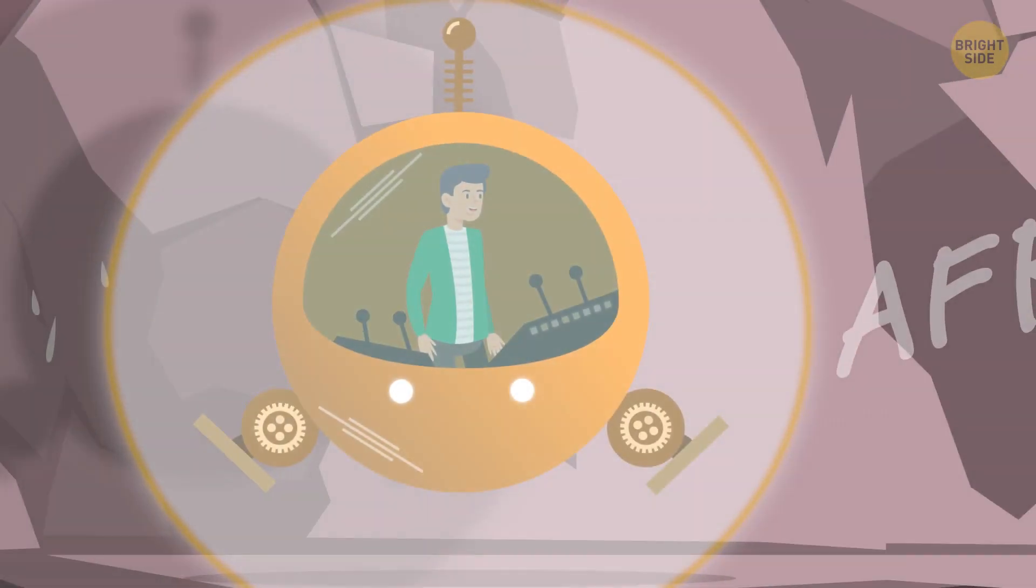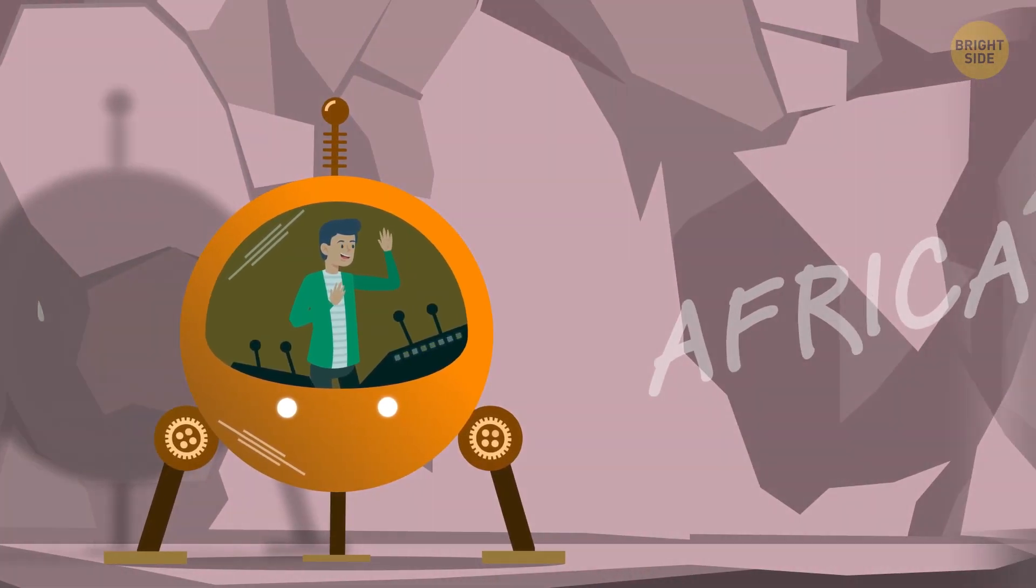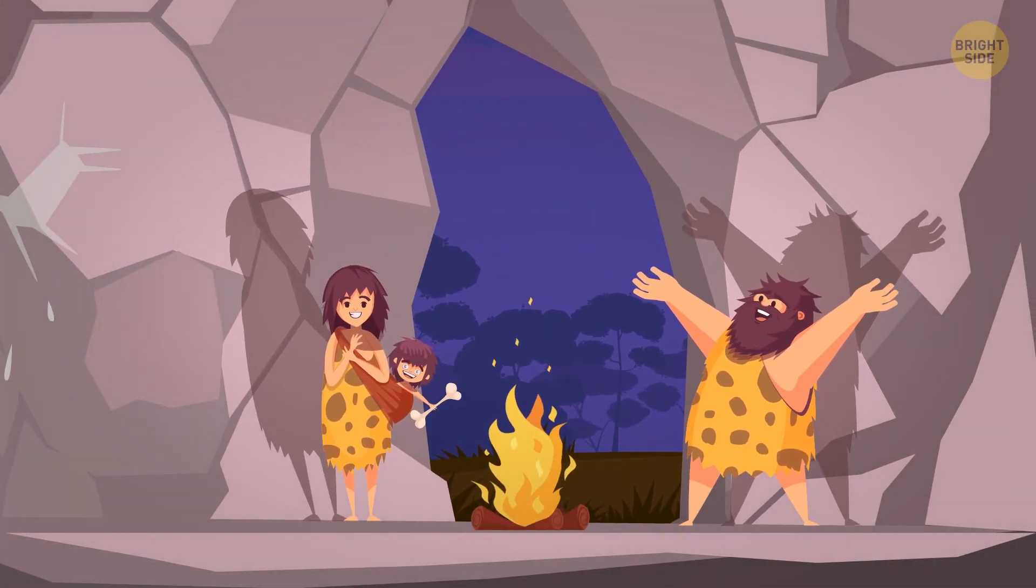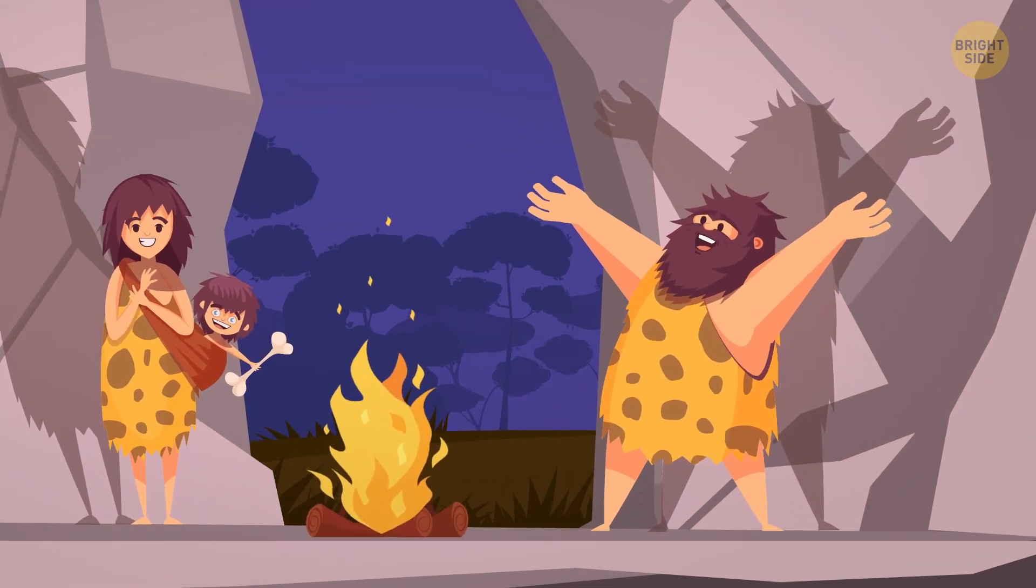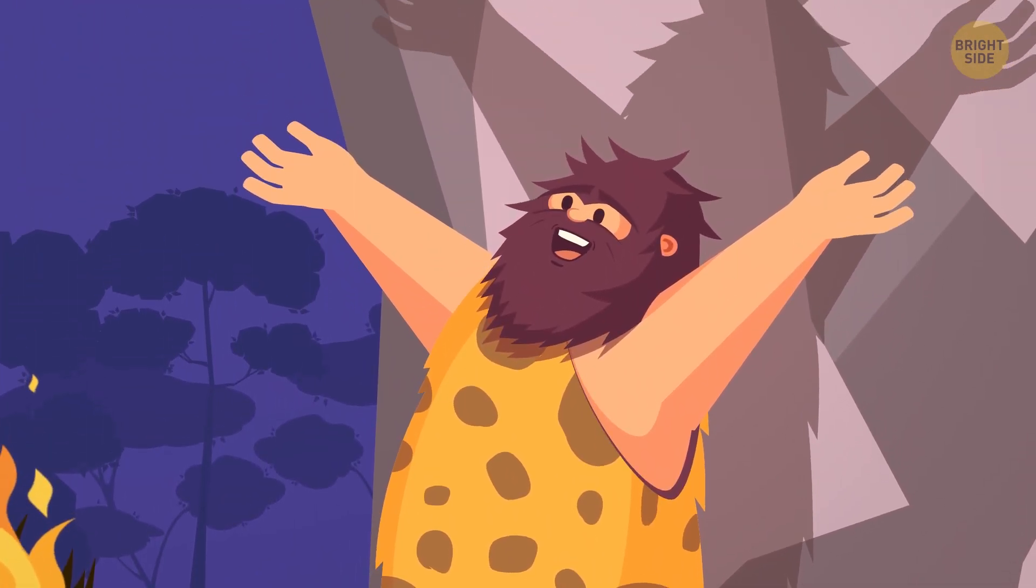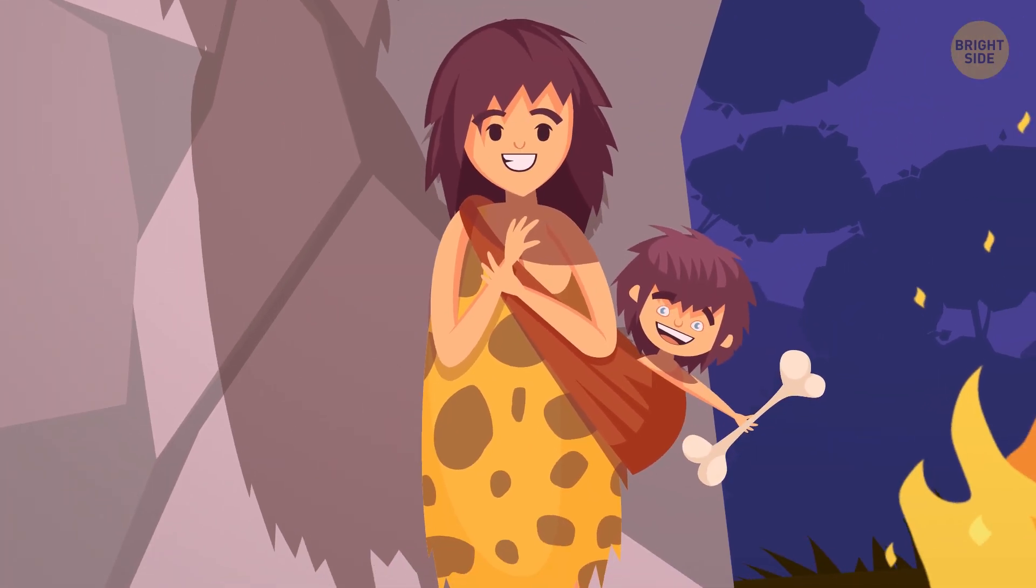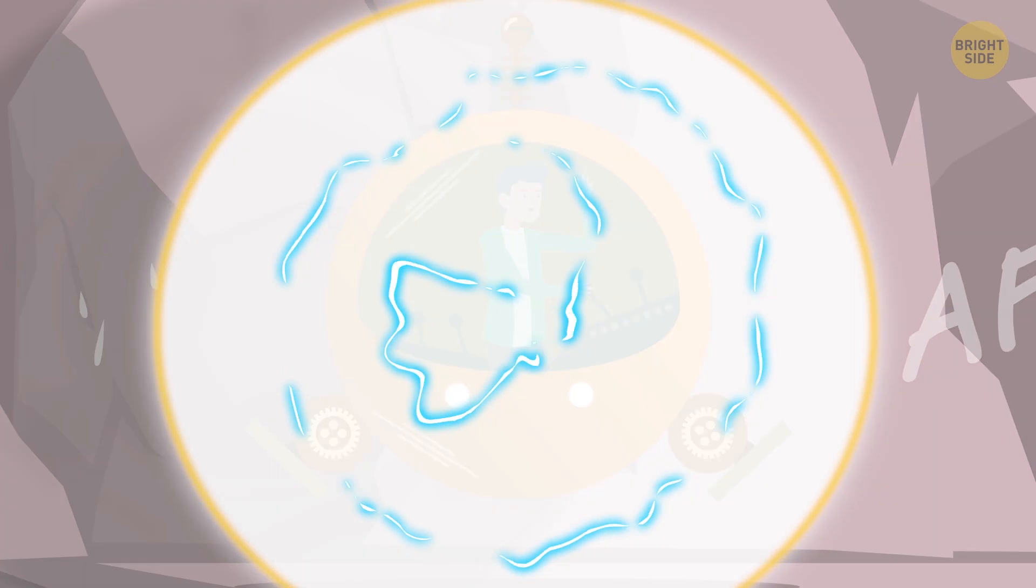After that, the time capsule takes Sam even deeper into the past, and he finds himself in Africa. That's where Homo sapiens, which is you and me and Sam himself, appear around 300,000 years ago. They were smaller than their ancestors and had impressively big brains, less heavy jaws, and smaller teeth. But Sam doesn't have time to make friends with early modern humans.